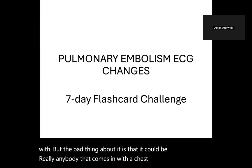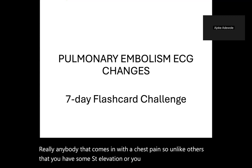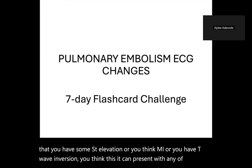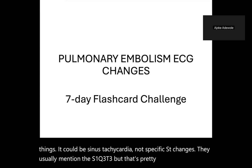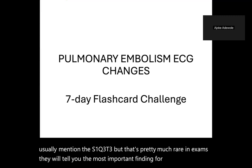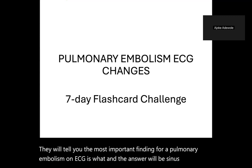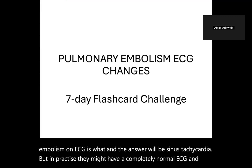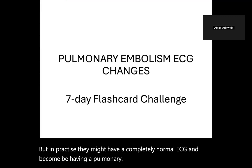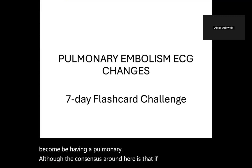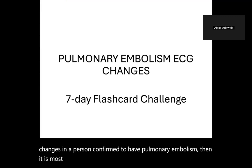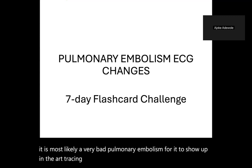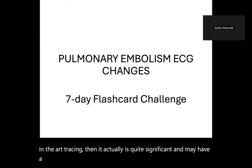The bad thing is it could be literally anybody coming in with chest pain. Unlike other conditions where you have ST elevation or T-wave inversion to guide you, PE can present with any of those findings. It could be sinus tachycardia or non-specific ST changes. They usually mention S1Q3T3 but that's pretty rare in exams. The most important ECG finding for pulmonary embolism is sinus tachycardia. In practice, they might have a completely normal ECG. ECG changes in a confirmed PE suggest a very bad, significant embolism with a poorer prognosis.